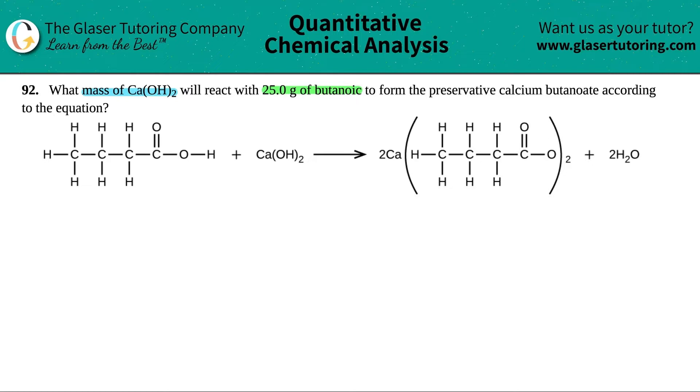Let's do this question. Now, I see that there's a little typo here. They should have said what mass of Ca(OH)₂ will react with 25.0 grams of butanoic acid. So it's not just butanoic, it should have been butanoic acid. And in this case, the butanoic acid is reacting with the calcium hydroxide. Here's the calcium hydroxide in this equation. The compound that's reacting with it is this. So this has to be the butanoic acid.